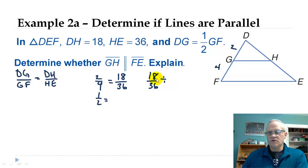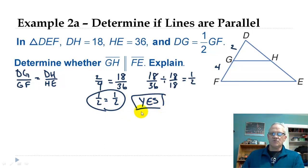Could we simplify 18 over 36? Well, if you're really good, you could say they could both divide by 18, which would make this one over two. And then you see, hey, look at that. It's the same ratio. And so we can say yes, those two lines, GH and FE are parallel, because we got the same ratio from the sides there.